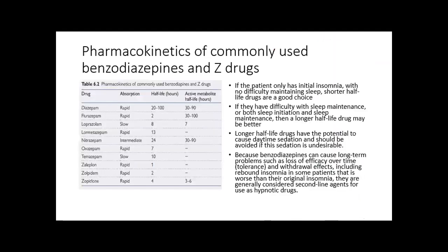Pharmacokinetics of commonly used benzodiazepines and Z-drugs. If the patient only has initial insomnia with no difficulty maintaining sleep, shorter half-life drugs are a good choice. If they have difficulty with sleep maintenance or both sleep initiation and maintenance, the longer half-life drug may be better. Longer half-life drugs have the potential to cause daytime sedation. Because benzodiazepines can cause long-term problems such as loss of efficacy over time, tolerance, and withdrawal effects including rebound insomnia, they are generally considered second-line agents for use as hypnotic drugs.